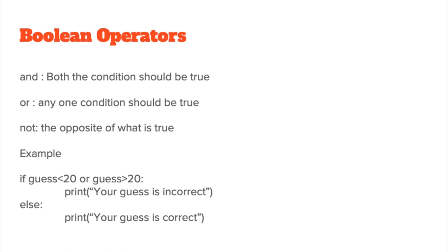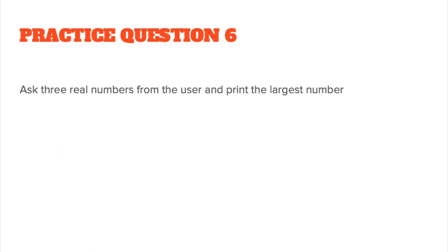Now let's look at boolean operators and how they can be used with selection statements. 'And' means both conditions should be true; 'or' means any one condition should be true; 'not' means the opposite of what is true. For example: if guess < 20 or guess > 20, then output 'Your guess is incorrect', else 'Your guess is correct' — because if it's not less than or greater than 20, it must be correct. In practice question 6, ask the user for three real numbers and print the largest.